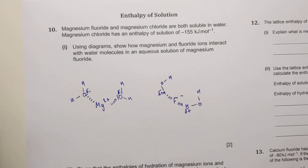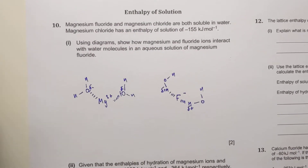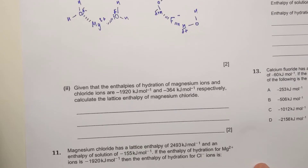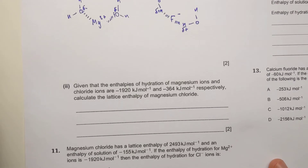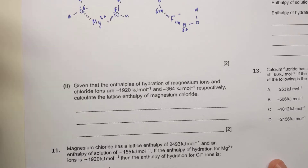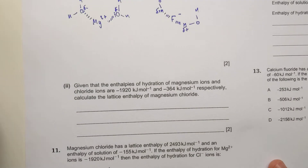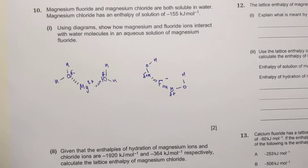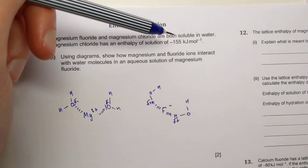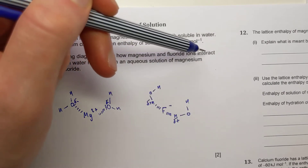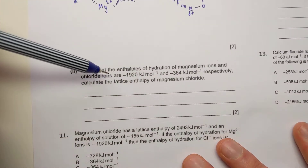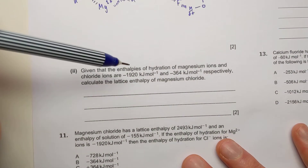That's the interactions diagram covered. Part two: given that the enthalpies of hydration of magnesium ions and chloride ions are minus 1920 and minus 364, calculate the lattice enthalpy of magnesium chloride. We look at those kinds of cycles — you're actually trying to get the lattice enthalpy. If you spot the rest of the question, they do give you the value of enthalpy of solution as minus 155, so the only missing part is the lattice enthalpy.